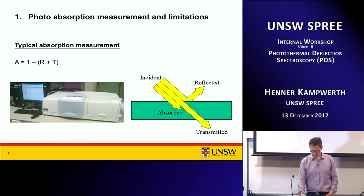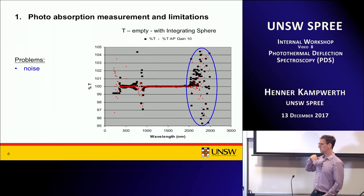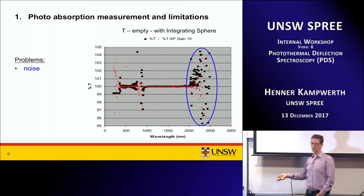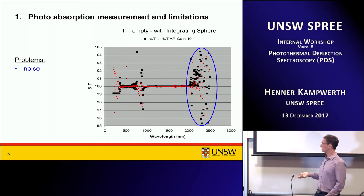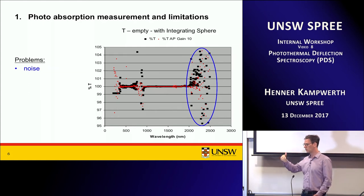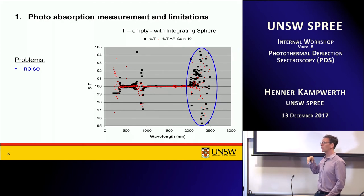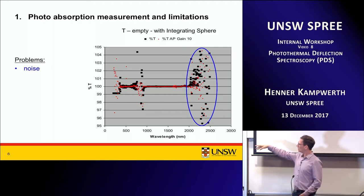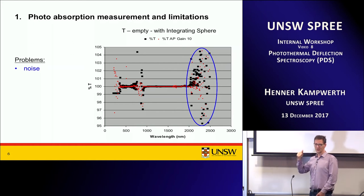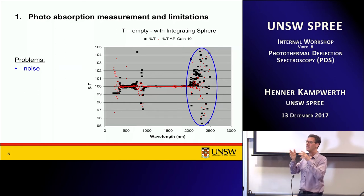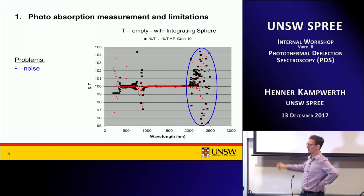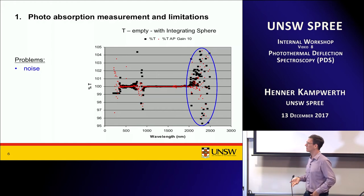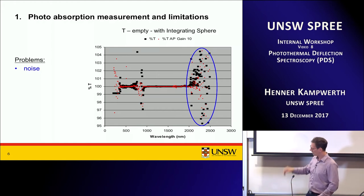It is a straightforward thing, but there are some problems. First problem is noise. The further you go into the infrared, the more detector noise you have. Everyone who has worked with photodetectors knows that as longer the detector is sensitive to infrared, the smaller the band gap and the more thermal noise you get. Here it starts at 2000 nanometers and you can see noise there. This graph shows transmission with no sample — basically a calibration run. What we should see is a straight line at 100%, but you can see noise when you go into longer infrared.